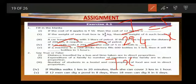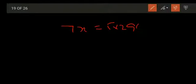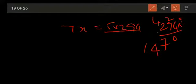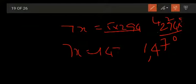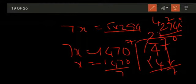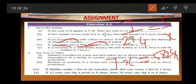Do cross multiplication: 7X is equal to 5 into 294. Multiply 294 with 5: 4 fives are 20, carry 2; 9 fives are 45, plus 2 is 47, carry 4; 2 fives are 10, plus 4 is 14. Totally we get 1470. So 7X is equal to 1470. X is equal to 1470 by 7. Dividing: 2 sevens are 14, bring down 7, 1 seven is 7, and one more 0, giving X equal to 210.